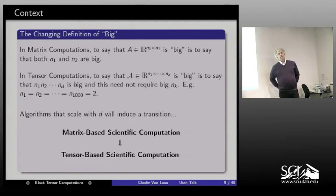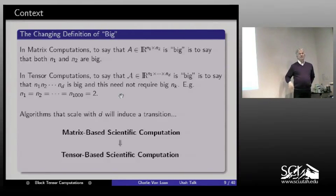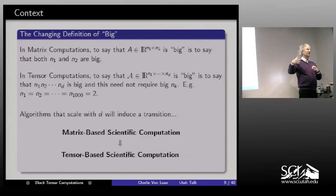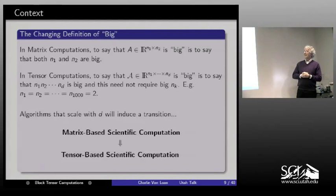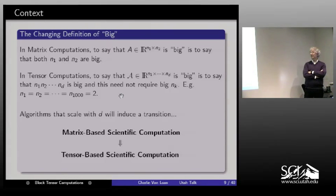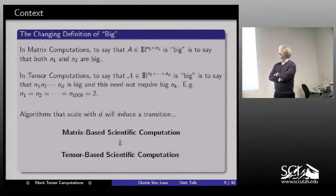When you hear people talk about the curse of dimensionality, they're talking about this. We are all hungry for more sophisticated models — ones that involve higher dimensions. That's a D-pressure, and we should focus our attention on algorithms that scale with D. From a matrix-oriented point of view, we're in a period of matrix-based scientific computation; numerical PDEs and optimization ultimately have some linear algebra operation at their innermost loop.